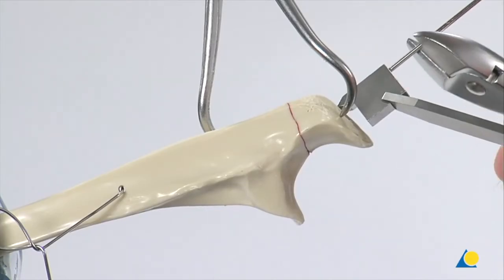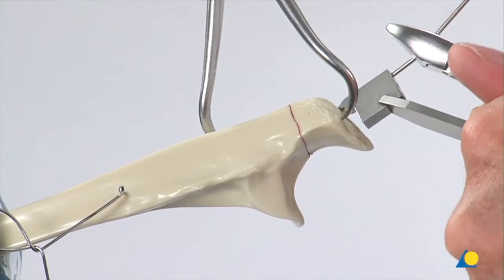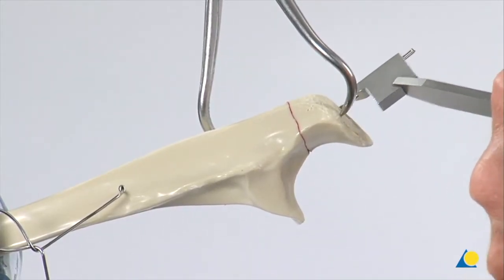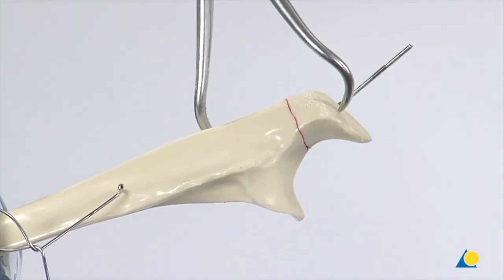Using the wire cutters, the K-wire is now trimmed obliquely about 1cm above the drill guide. The drill guide is removed. The reduction forceps is now removed.